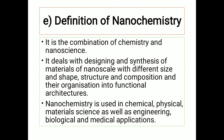Now the definition of nanochemistry: nanochemistry is the combination of nano and chemistry, where nano means nanotechnology. So it is the combination of nanotechnology and chemistry. Nanochemistry deals with the designing and synthesis of materials of the nanoscale — that is, materials very small in size — with different size, shape, structure, and composition, and their organization into functional architectures.